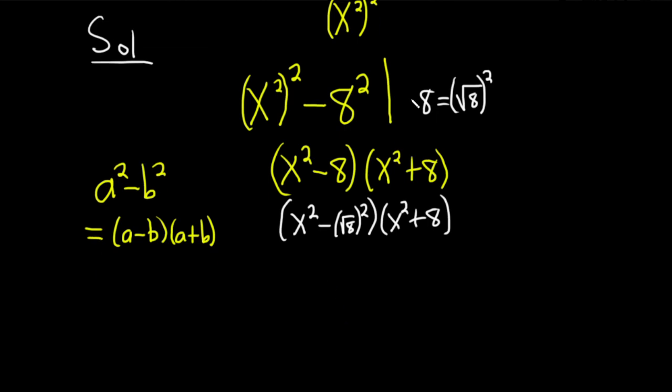And so now we use the difference of squares formula again. This is going to be x minus the square root of 8, times x plus the square root of 8, and then x squared plus 8.